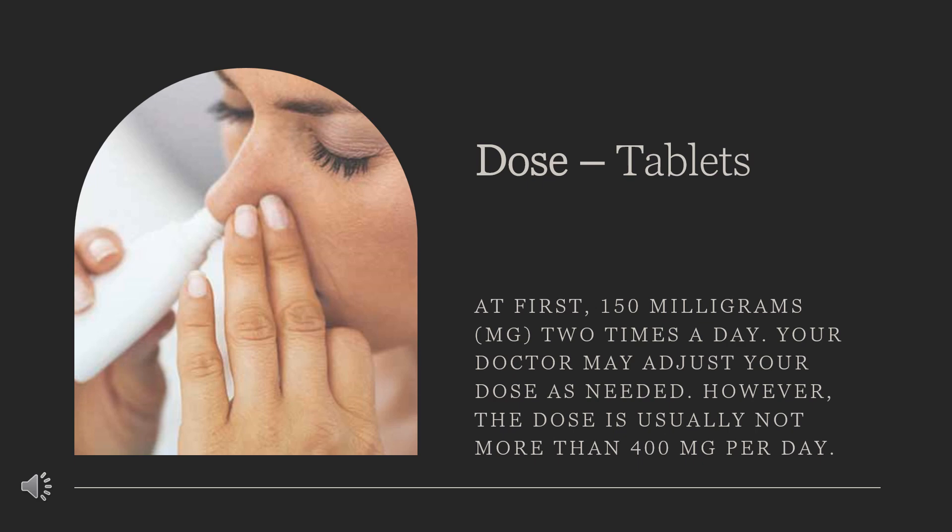For acute gout, bursitis, or tendinitis — adults: at first, 200 mg, 2 times a day. After the pain is relieved, your doctor may direct you to take a lower dose for a while before treatment is stopped completely. Children: use and dose must be determined by your doctor.